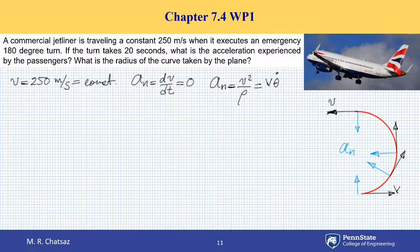So, here, the turn is 180 degrees, but note that we want to use it in radians, so that is pi radians. And the time corresponding to this is 20 seconds. So you see how I can calculate theta dot and plug it in the given equation for A-N and solve the equation for rho.